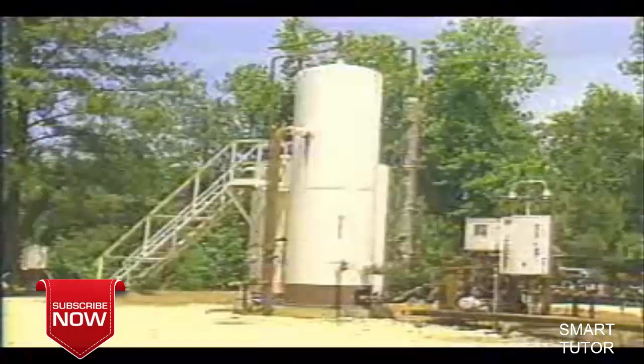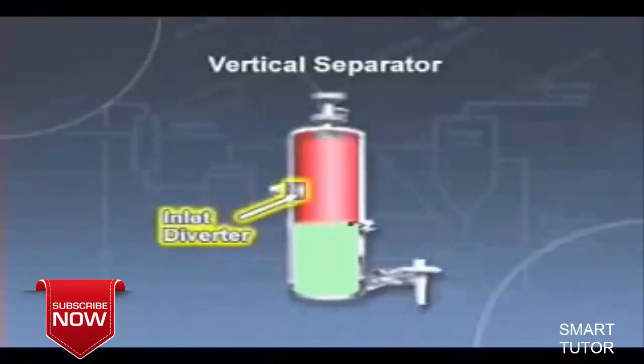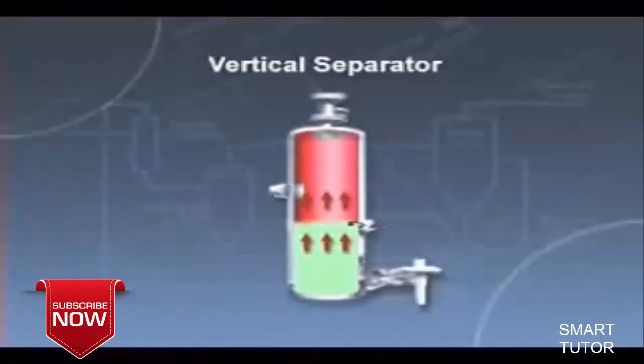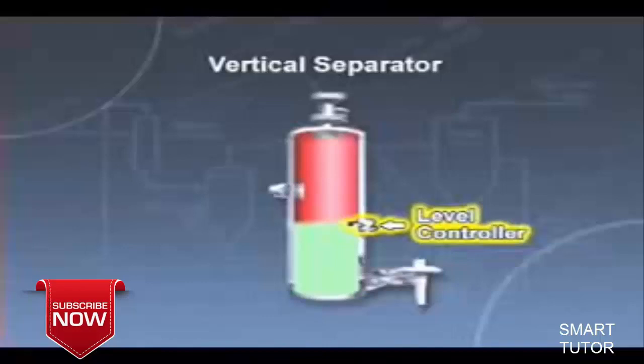In a vertical separator, fluid enters the vessel through a side inlet. An inlet diverter provides the initial gross separation and leaves the vessel after passing through a mist extractor. The liquid leaves the vessel through the liquid dump valve, which is regulated by a level controller.